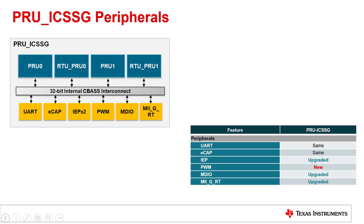Similar to the PRU ICSS, the PRU ICSSG has several integrated peripherals. By integrating the peripherals inside the ICSS subsystem, the PRU read and write access latency is significantly reduced compared to external SOC-level peripherals. The PRU ICSSG peripherals include UART, ECAP, Industrial Ethernet Peripheral or IEP, PWM, MDIO, and MIIGRT. As shown in the table on the slide, some of the peripherals are identical to PRU ICSS, others are upgraded, and one is brand new.